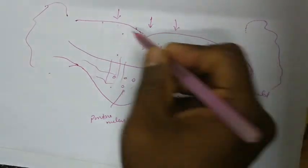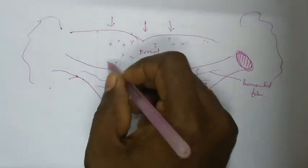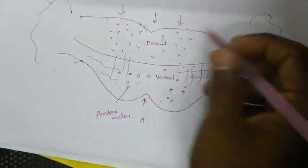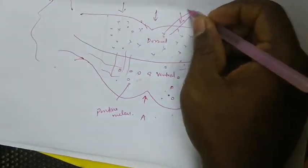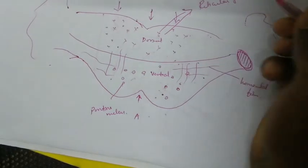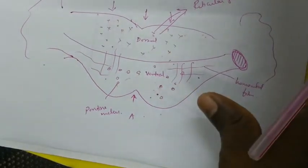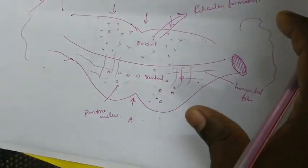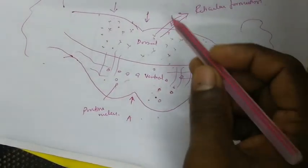The dorsal aspect of the pons contains scattered nerve fibers and scattered nerve cell bodies, which is the scattered gray matter. Together, these scattered nerve fibers and gray matter can be described as reticular formation. Reticular formation is defined as an area where we don't see any well-defined nuclei or fibers packed in bundles — the fibers and neurons are scattered. This reticular formation is present throughout the brain stem.